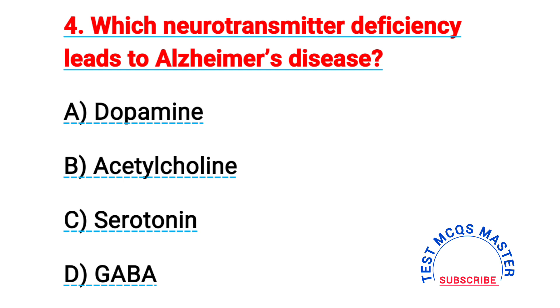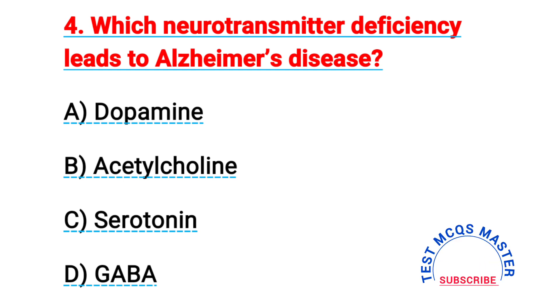Question number four: which neurotransmitter deficiency leads to Alzheimer's disease? The right answer is B, acetylcholine.